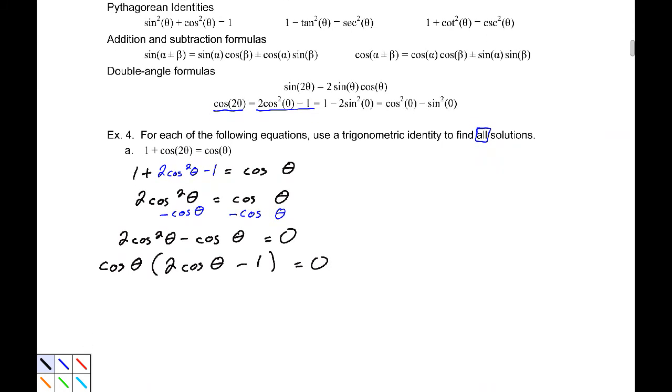Now, we can't factor that expression anymore, but now we can set them each equal to 0. So, we know we're going to need cosine theta equals 0 or cosine theta equals positive 1 half, adding 1, dividing by 2.